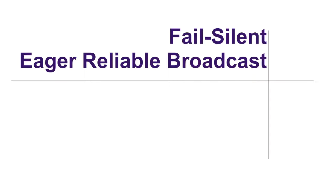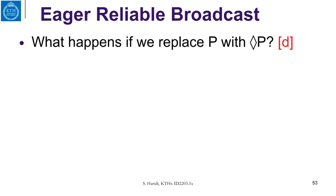Let us go back to our Lazy Reliable Broadcast algorithm. Let's consider the case where our Lazy Reliable Broadcast uses ◇P instead of P. So we have ◇P instead of P, and you remember ◇P has eventual accuracy while P has perfect accuracy.